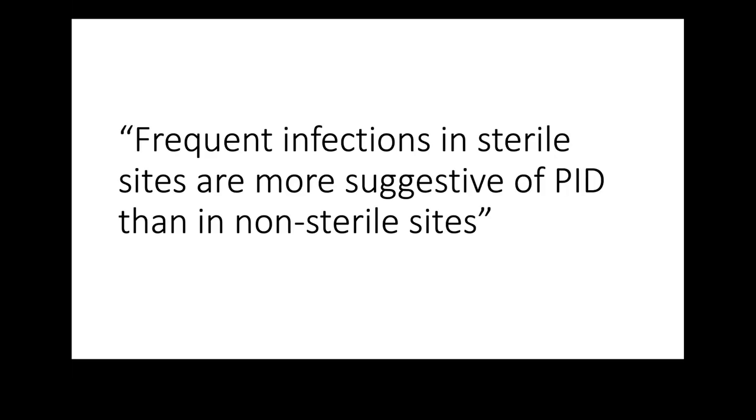With regard to site of infection, the most important clue is infections in sterile areas — such as kidneys, blood (sepsis), or meningitis — which are more suggestive of primary immune deficiency. Skin infections and tonsillitis are less alarming because microorganisms are already present there. If a child gets two or more infections in the lungs or in the blood, we need to evaluate them for primary immune deficiency.